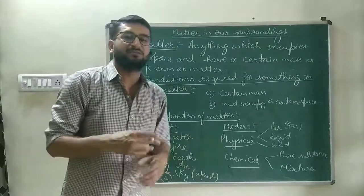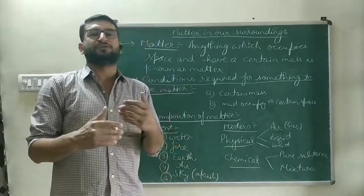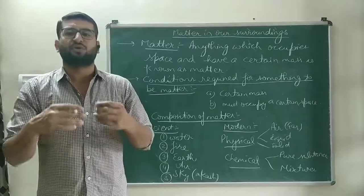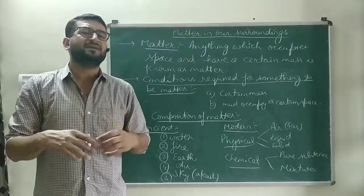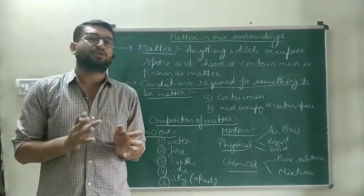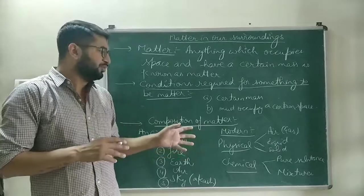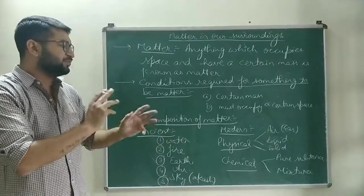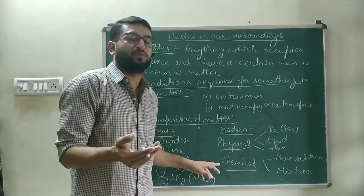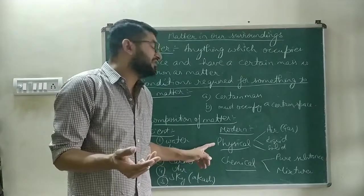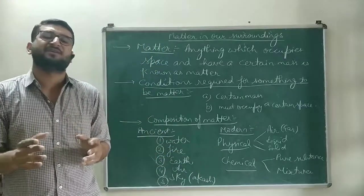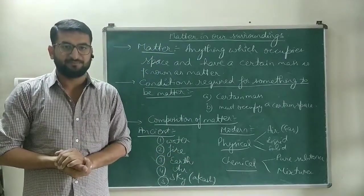Chemical differentiation of matter will be studied in the next chapter, which involves pure substances and mixtures. Pure substances are further divided into metals, non-metals, and metalloids. Mixtures are also further divided into true solutions, suspensions, colloids, and various forms of compounds. These will be studied in the next chapter — 'Is Matter Around Us Pure?' — while physical differentiation of matter will be studied in this chapter.